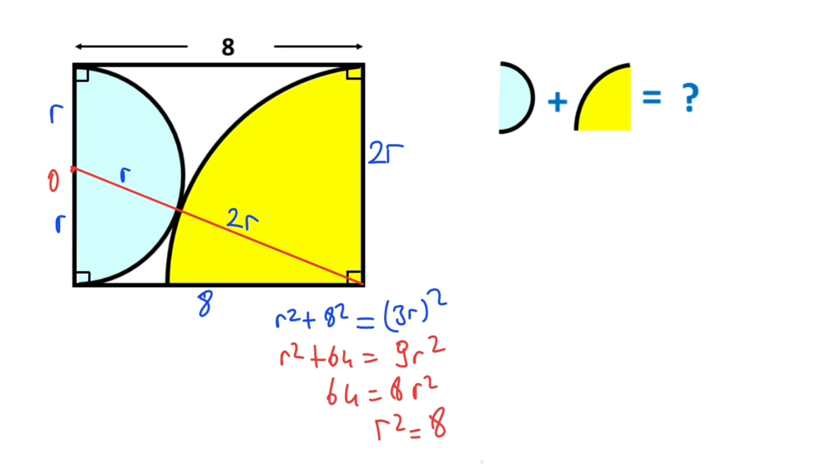Alright, let's calculate the sum of the shaded areas. The semicircle area equals πr²/2, and the quarter circle area equals π(2r)²/4, which simplifies to π·4r²/4.